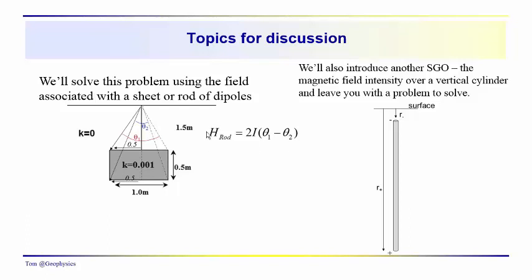Remember we got this relationship here for a wall or a truncated sheet. We'll also talk about another simple geometrical object, and that is going to be the magnetic field intensity over a long vertical cylinder, and we'll leave you with a problem to solve.